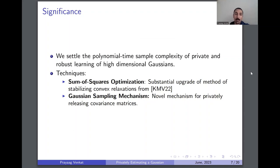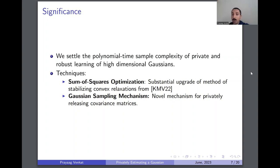To summarize the significance: we settled the polynomial time sample complexity of the fundamental problems of private and robust learning of high-dimensional Gaussians, demonstrating that there are essentially no significant sample complexity or computational complexity costs when imposing privacy and robustness constraints. We also introduce interesting new techniques: we use the sum of squares SOS hierarchy, give a substantial upgrade of the method of stabilizing convex relaxations to achieve optimal sample complexities, and introduce a novel Gaussian sampling mechanism to privately release covariance matrices with good utility guarantees.